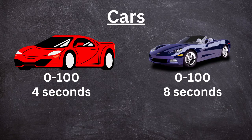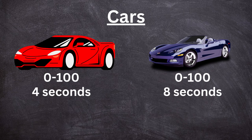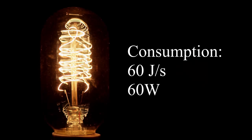So what does power mean in our daily lives? Say you have a car that goes from zero to 100 kilometers per hour in four seconds, and another car that goes from zero to 100 kilometers per hour in eight seconds. You would say that car one has a much more powerful engine than car two — that is power.